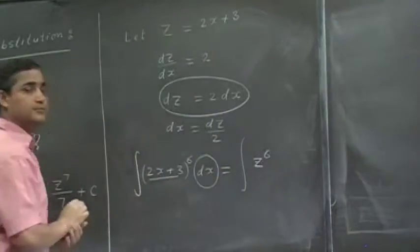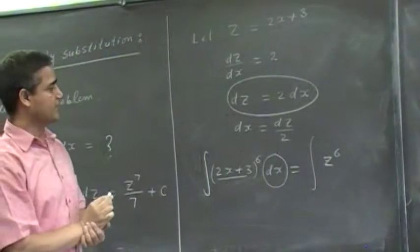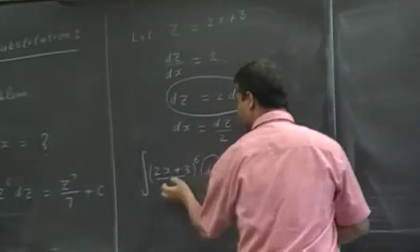Divide both sides by 2. Okay? You see the point, okay? Then, let's go back to this.